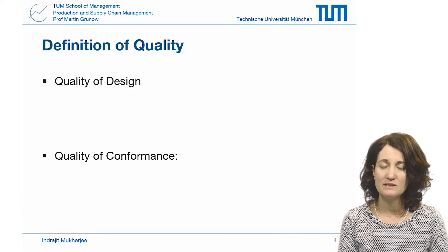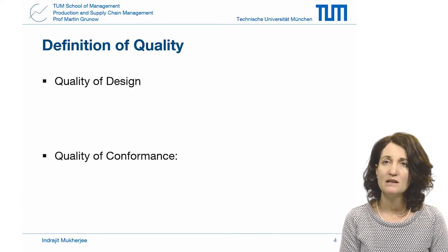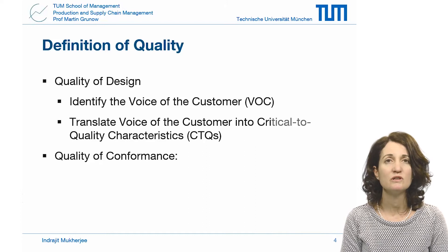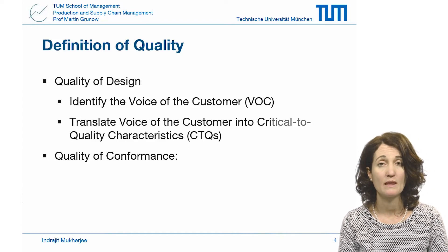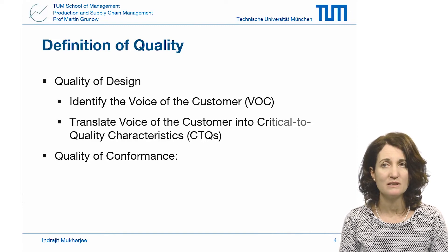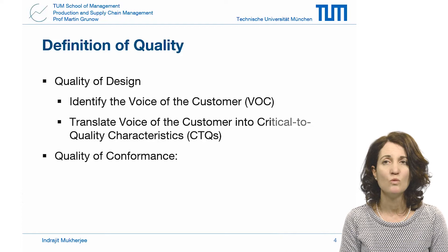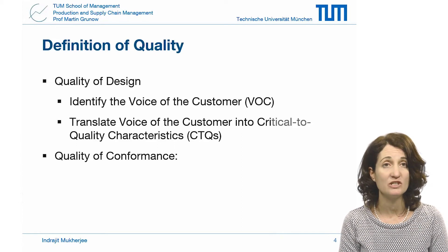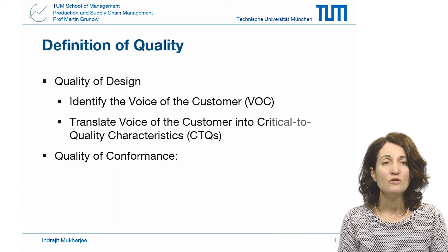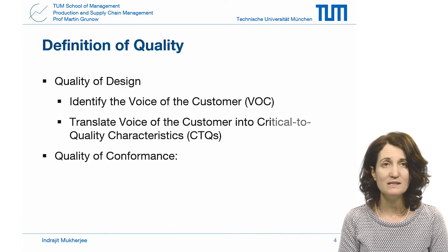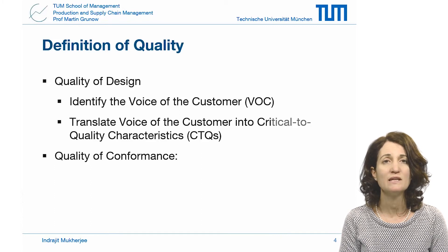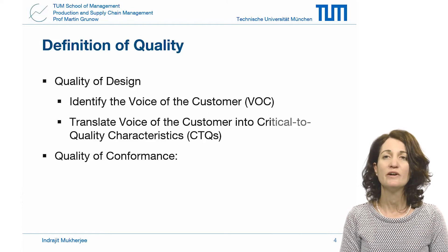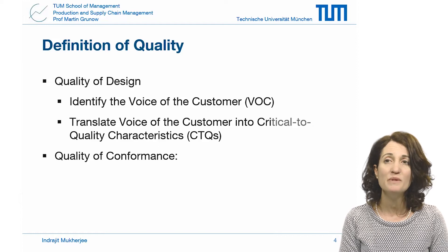To achieve quality of design, we need to identify the customer's wants and needs — the voice of the customer, or VOC. Sometimes you also hear voice of business, or VOB. These are what the customer is expecting from our products and services, the features that the customer wants. These become our product design specifications, and we try to make these robust against changes. These wants and needs are then translated into the so-called critical to quality characteristics, or CTQs, which should be measurable and allow us to evaluate whether our product or service is meeting the voice of the customer.